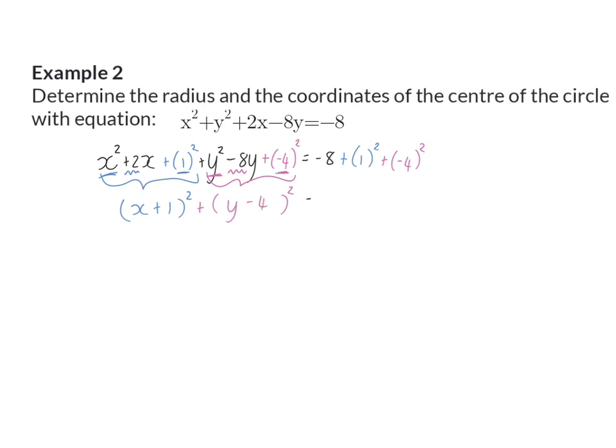On the right, I can simplify, and that will give me 9. Therefore, I can say that my center will be at (-1, 4), and my radius will be 3.